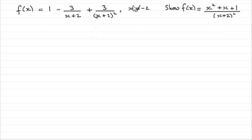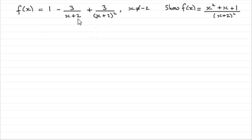Just to point out, in case you're unsure, why x doesn't equal minus 2: it's because if x were minus 2, the denominators in these fractions would be 0. And 3 divided by 0 — or anything divided by 0 — would give you a maths error on a calculator. It's basically an undefined result.